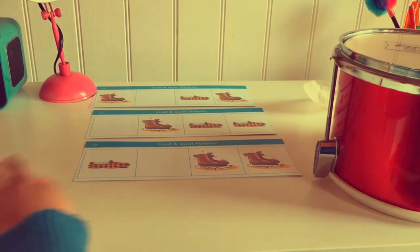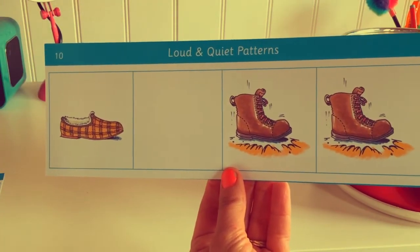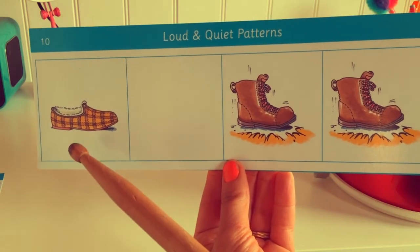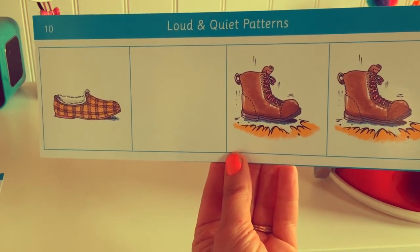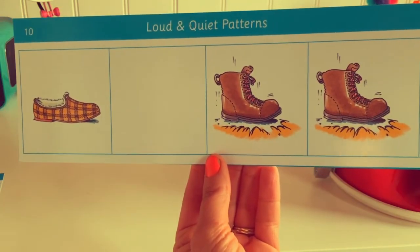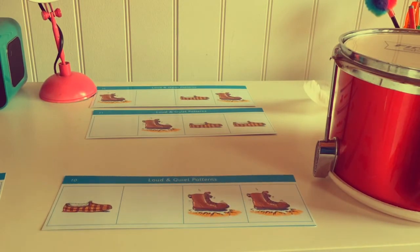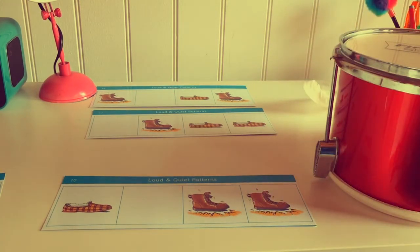Who can tell me what they can see in this pattern? That's right. We've got a slipper — quiet. Nothing at all, so no sound. Maybe we'll go shh in that one to be quiet. And then a boot for loud and another boot for loud. Shall we try it all together? Quiet, silence, loud, loud. And again: quiet, silence, loud, loud. That was fantastic.